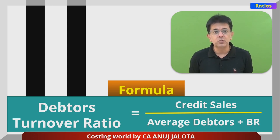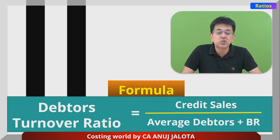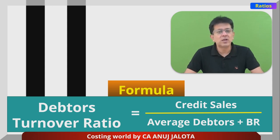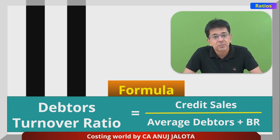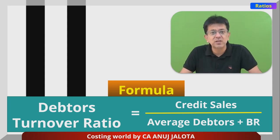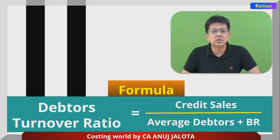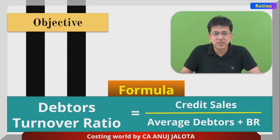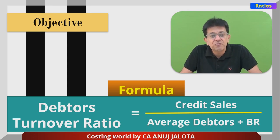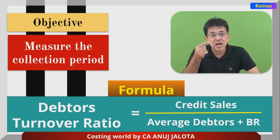This formula tells you how good your collection department is doing — the collection department being that department responsible for getting money back from customers. So this tells you on average in how many days you are going to get your money. This formula gives the answer in times; in case you want it in days, it's 365 divided by the answer you get. The objective is basically to know how fast you are recovering money from your customers, so it measures the collection period. Higher the ratio means you are recovering money faster.